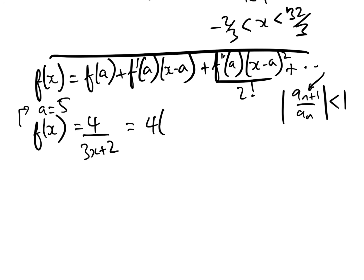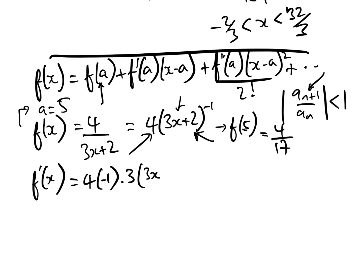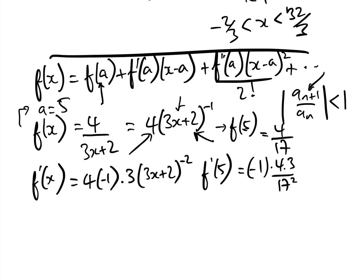We rewrite f(x) as 4 times (3x plus 2) to the power of minus 1. Then f(5) equals 4 seventeenths, just by substituting x equals 5. Now f'(x) equals 4 times minus 1 times 3 times (3x plus 2) to the minus 2, keeping it in this form to find the general term. Therefore f'(5) equals minus 1 times 4 times 3 over 17 squared.